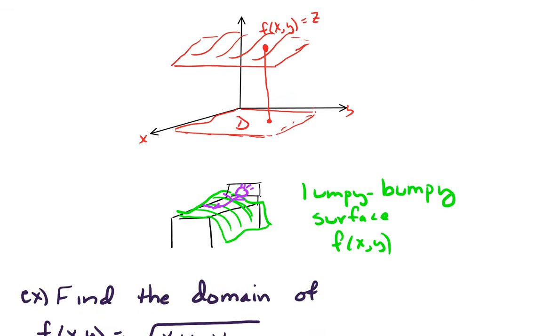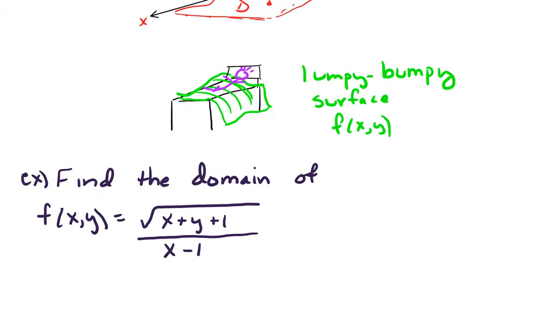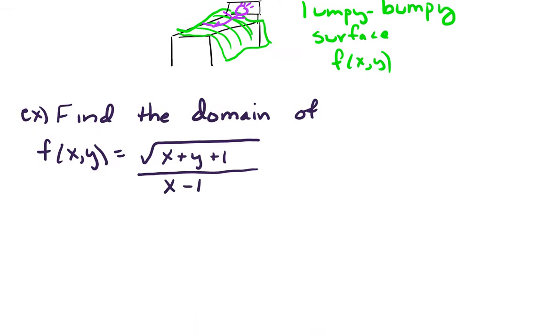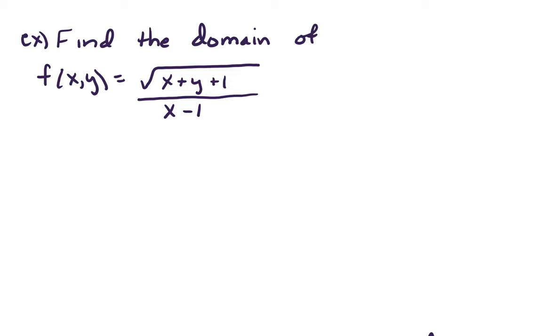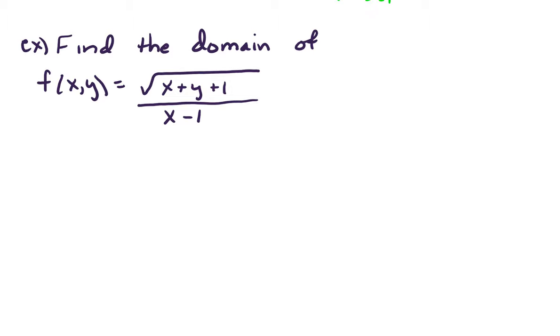Let's do some examples. The first thing we want to do is find the domain of f(x, y) equals the square root of x plus y plus 1, all over x minus 1.